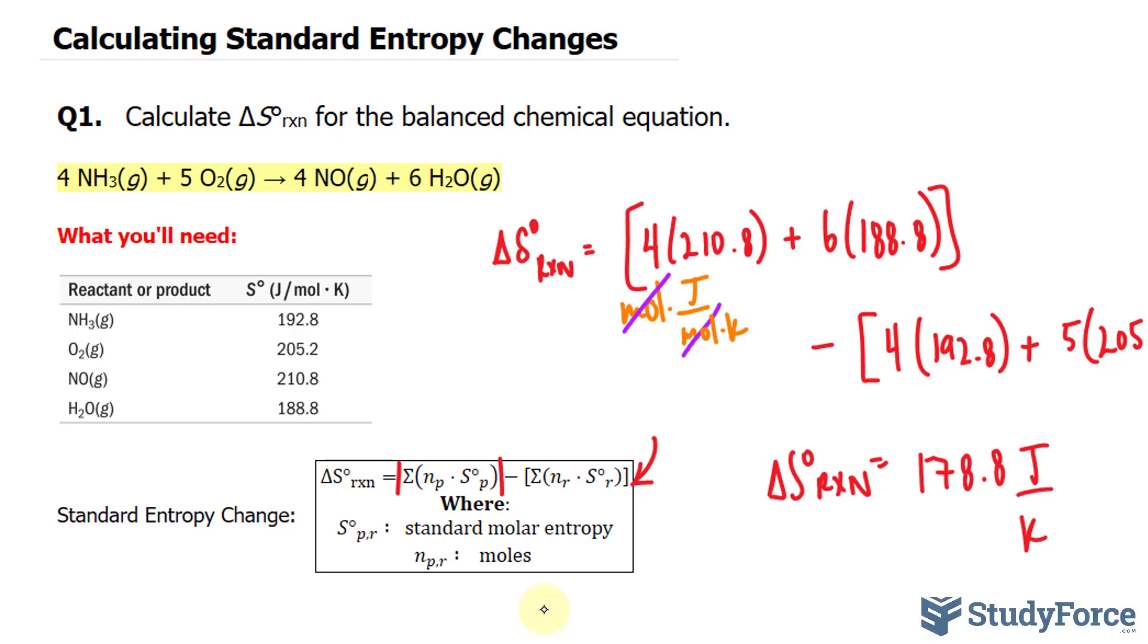And notice that this number is positive. You would expect that because you're going from 9 moles to 10 moles. So entropy is increasing, there's more disorder happening in the system. And when that happens, delta S is positive.